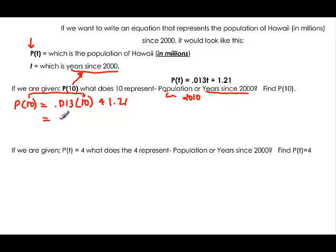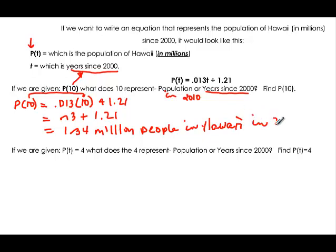When we multiply, we get 0.13 plus 1.21. If we add 0.13 plus 1.21, we get 1.34, which means 1.34 million people in Hawaii in 2010.